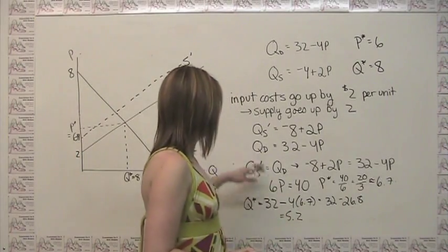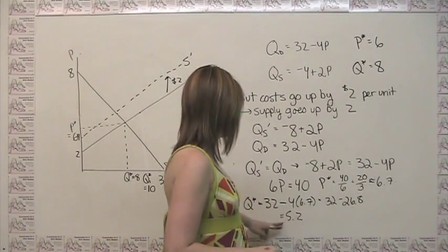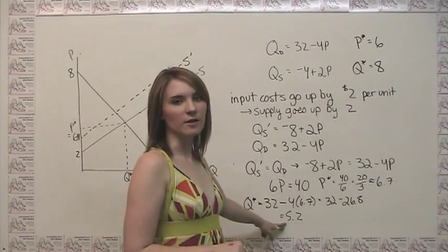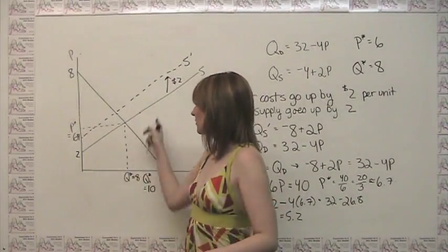So we can say that our new equilibrium price is about 6.7, and our equilibrium quantity is now 5.2. And we can graph those here.